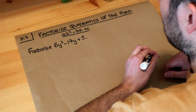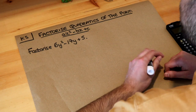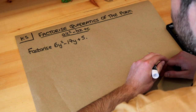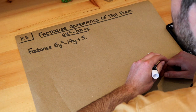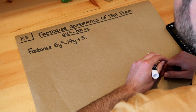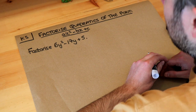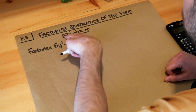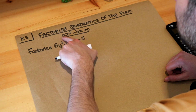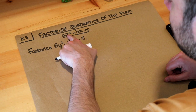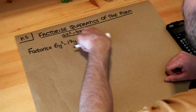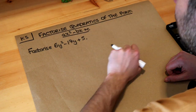Hello and welcome to this Dr. Ross Masskey skill video on factorising quadratics of the form ax squared minus bx plus c. In the previous video we explored how to factorise quadratics where there's a number in front of the x squared, but we only dealt with cases where we had positive terms.